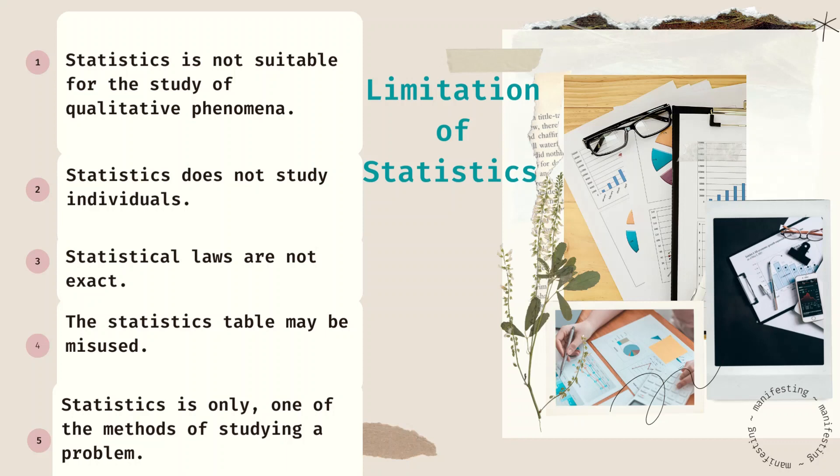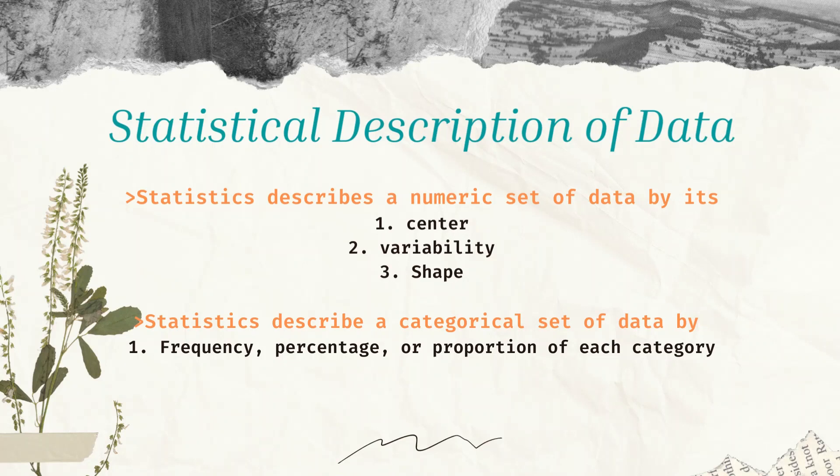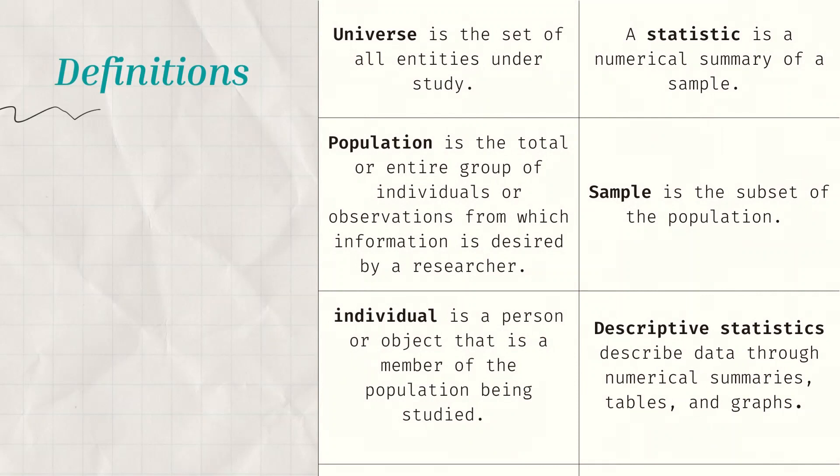Next, statistical description of data. Statistics describes a numeric set of data by its center, variability, and shapes. For the center, that is under measure of central tendency. We also have variability and the shape of your data if it is normal curve or not. Variability: how spread your data are. And now, statistics describe a categorical set of data by frequency, percentage, or proportion of each category.